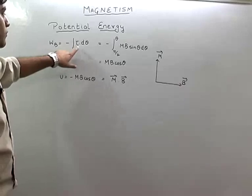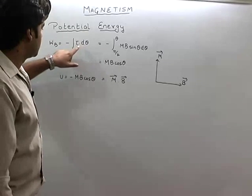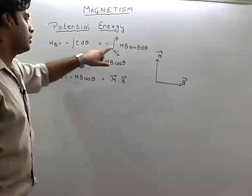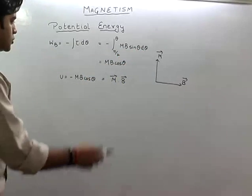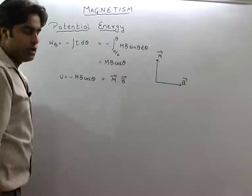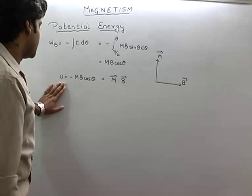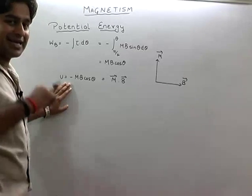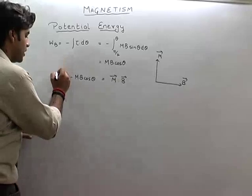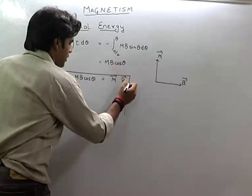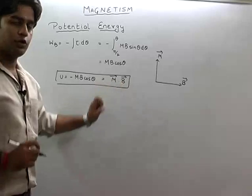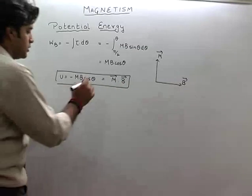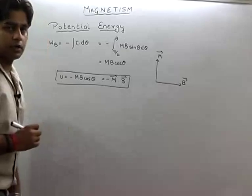So let us see, work done is given by minus integration of tau into d theta. Tau ki value is MB into sin theta into d theta. Integrating this we get MB cos theta. So the potential energy at any state can be given by U is equal to minus MB cos theta, or minus M dot B.